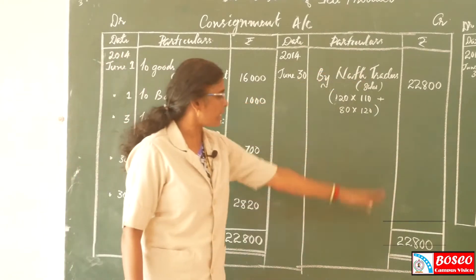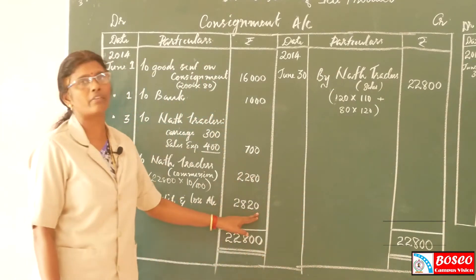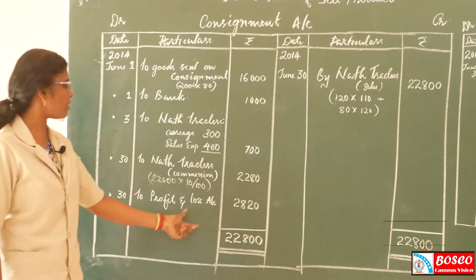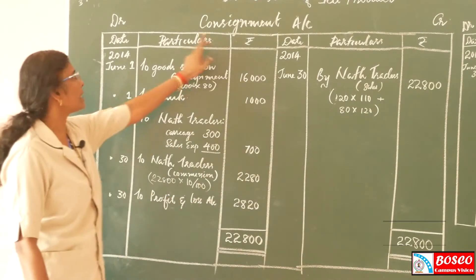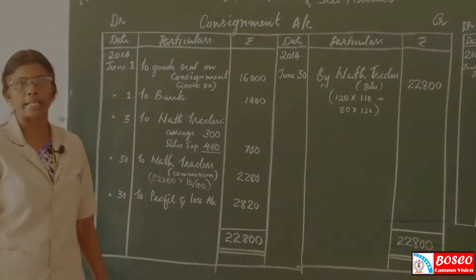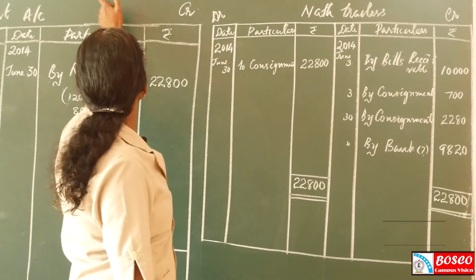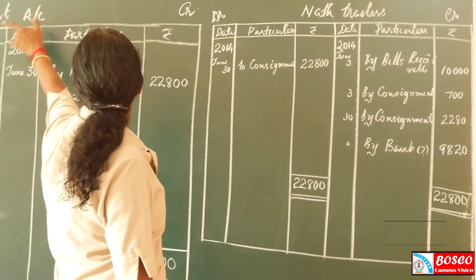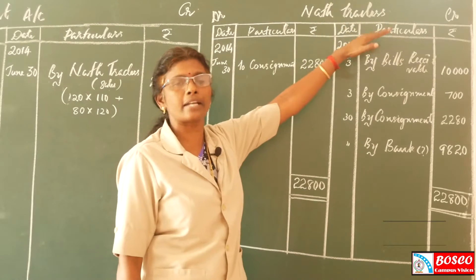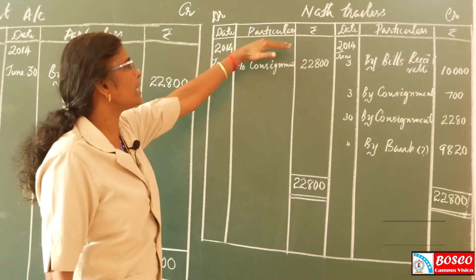Here, the credit side has the higher amount, making a profit. The difference is Rs. 2,820, which goes to the Profit and Loss account. The journal entry is: Consignment Account debit to Profit and Loss Account. The second account in the books of J. Products is the North Traders (consignee's) account.